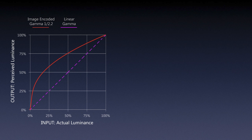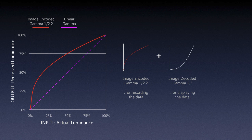You might ask: what are we doing here — just brightening up the image? Well, in order to correct for this and get the end result to match how we perceive the linear capture of the camera, we need to do something in reverse. We need to shift this curve like a mirror image to the other side. This is image encoding — only for recording the data within the image.